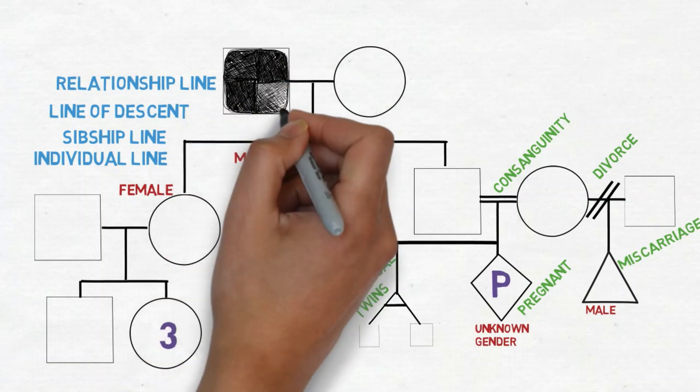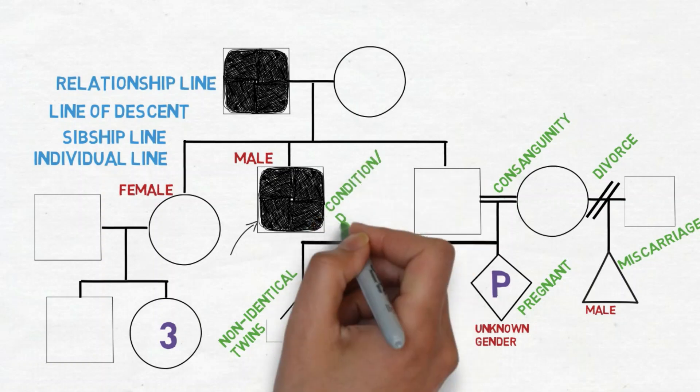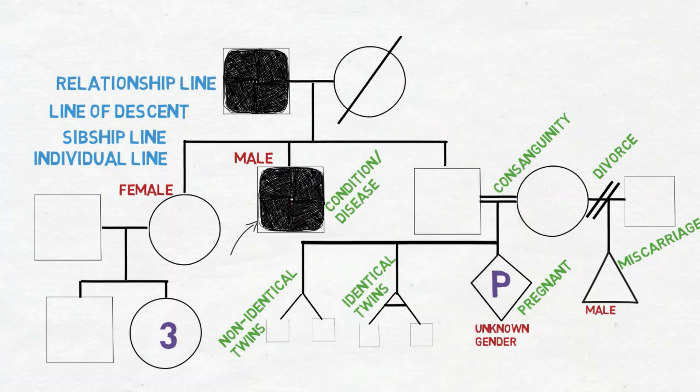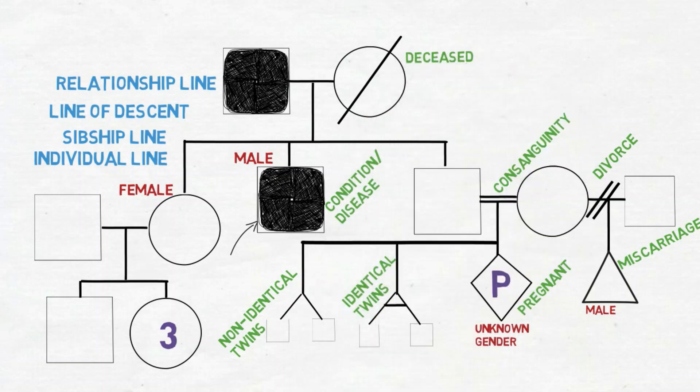If we shade in now the father and the individual himself, this means that they have a condition or a disease. If you don't know what it is or you do know what it is you can just write it in underneath. His mother has a strike through because she is deceased. So you strike through anyone who is deceased. Just a single strike.